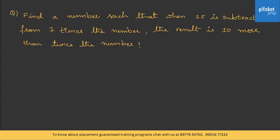Find a number such that when 15 is subtracted from 7 times the number, the result is 10 more than twice the number. The number is unknown, so let's assume the number to be x. When 15 is subtracted from 7 times the number, 7 times the number can be written as 7x.